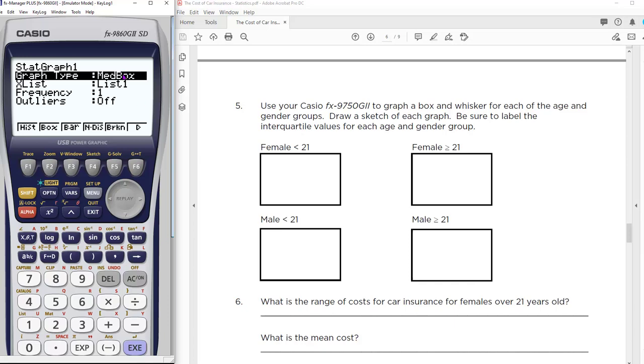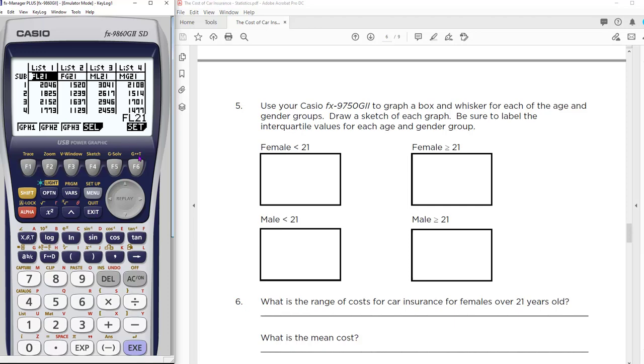That does the box plot. Where is graph one coming from? List one, which is females. Do we want outliers? Let's turn them on. I don't know if we have any, but let's leave them on. Now let's exit. I still need to set up graph two. I also want to see the box and whisker for list two.